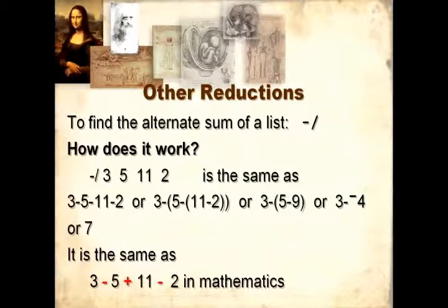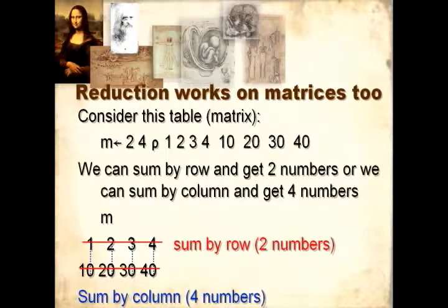3 minus 5 plus 11 minus 2. Reduction also works on matrices. Consider this table. We can sum row by row and get two numbers, or we can sum column by column and get four numbers.